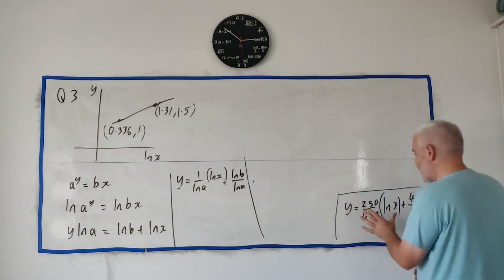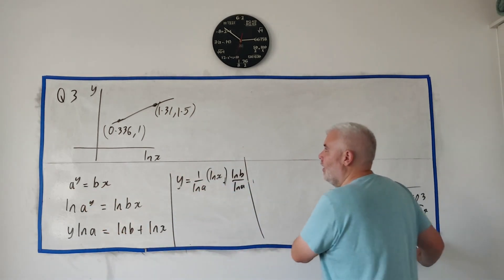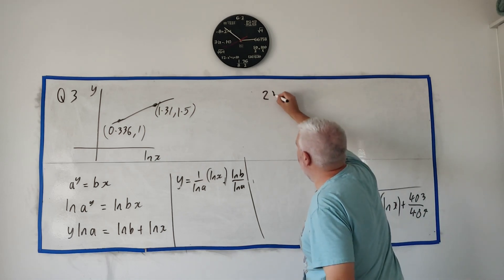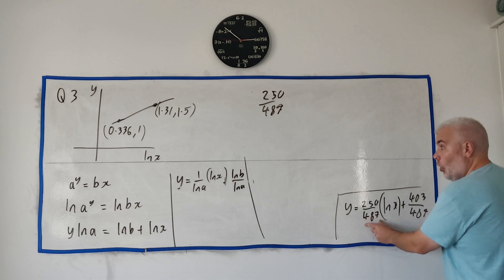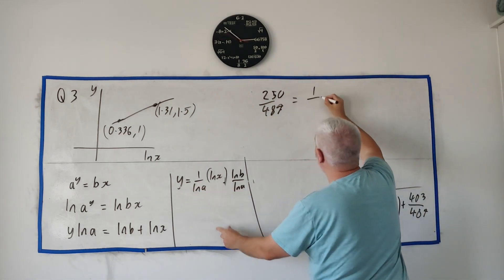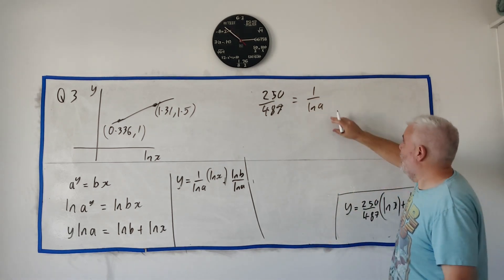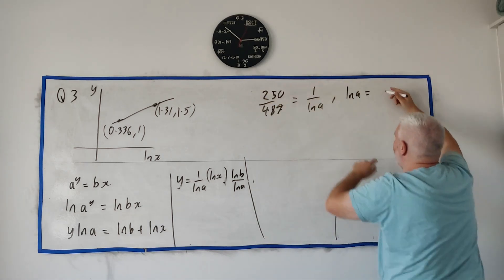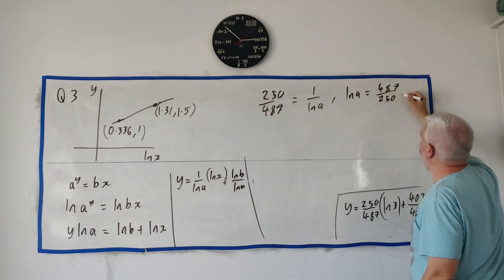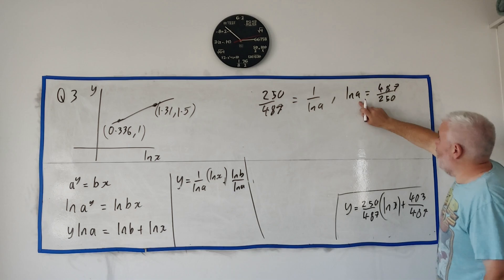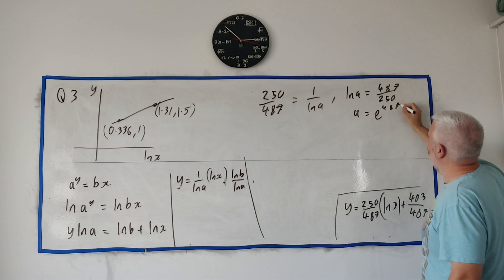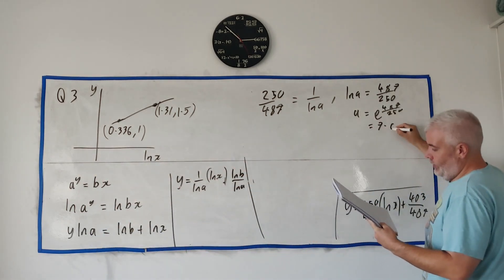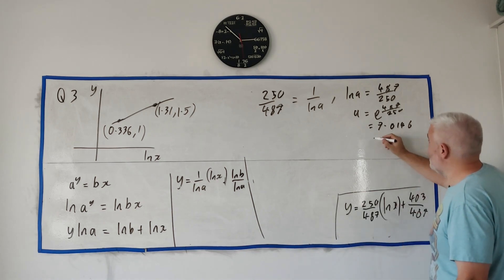So we have this equation and this equation. I got this one just by playing around with this. I got this one over here by knowing this was a line. So if we put these together, it's quite clear to see that this number out front, 250 divided by 487, the slope, is equal to 1 over natural log a. I could just rearrange this and solve for a. That becomes natural log a is equal to 487 divided by 250. And a is equal to e to the power of 487 over 250. And that's equal to 7.0146. They want the nearest integer. So it's just 7. Close enough to 7.